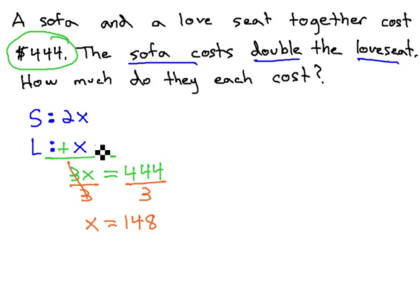Using our clear labeling, we see that the love seat was x for $148. The sofa is 2x, or 2 times 148, which gives us the cost of the sofa at $296.